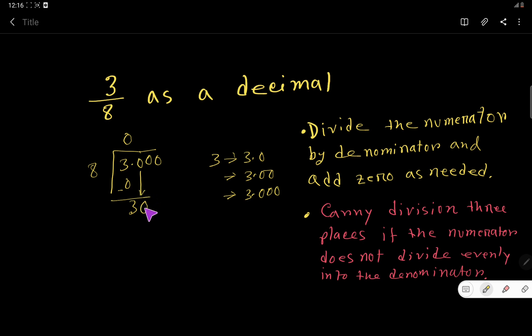When you bring down the 0, the decimal point comes here. So 8 goes into 30 how many times? Use the multiplication table: 8 times 1 is 8, 8 times 2 is 16, 8 times 3 - add 8 to 16 - that's 24.